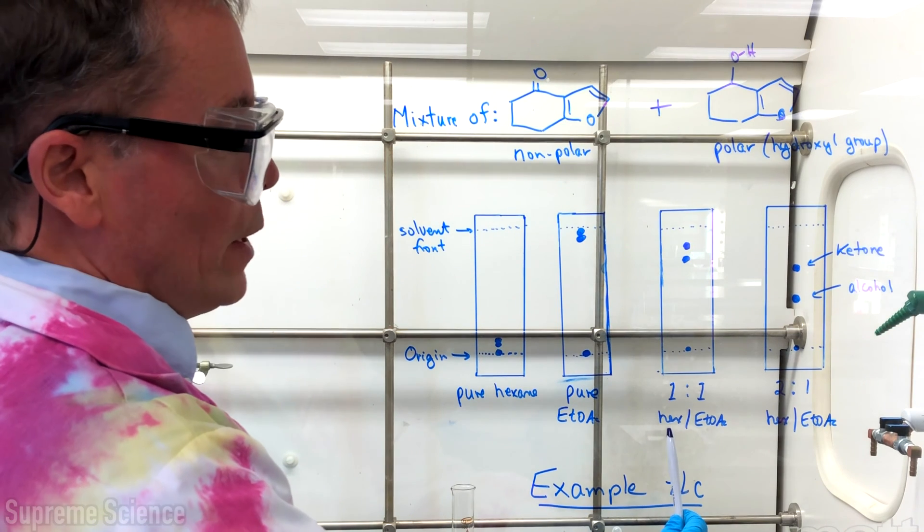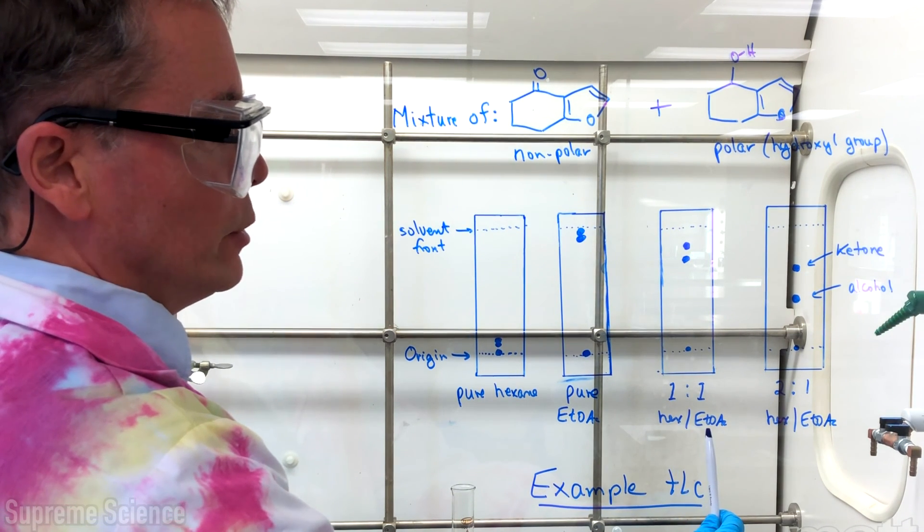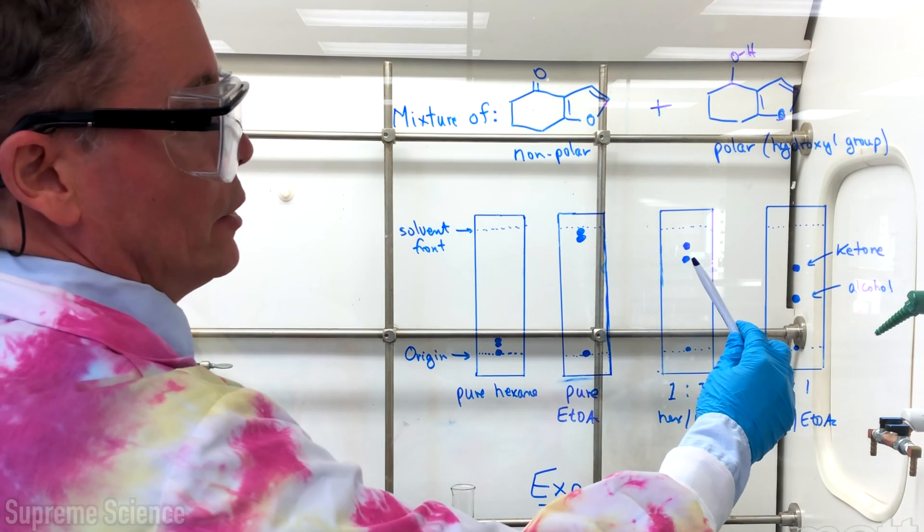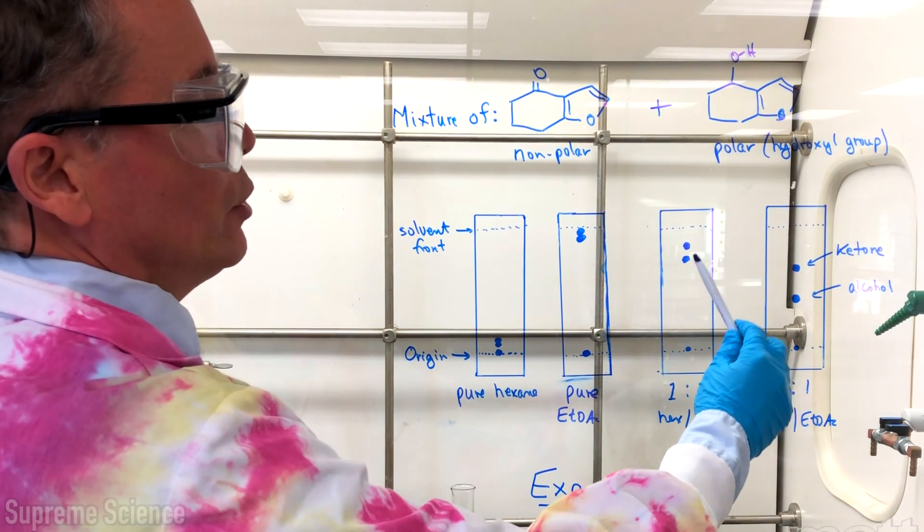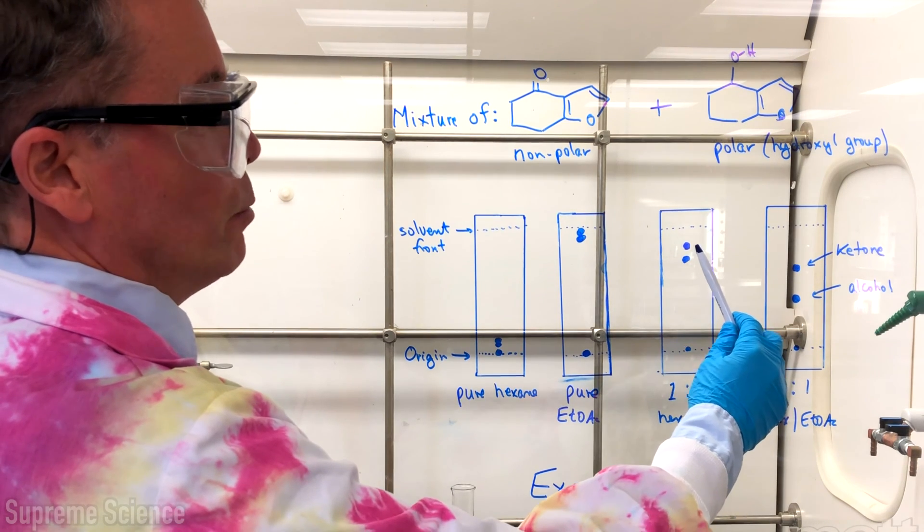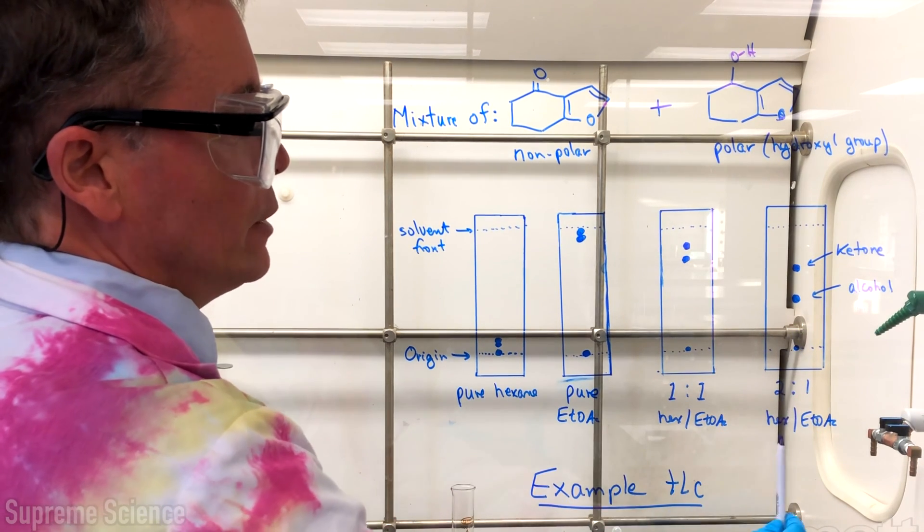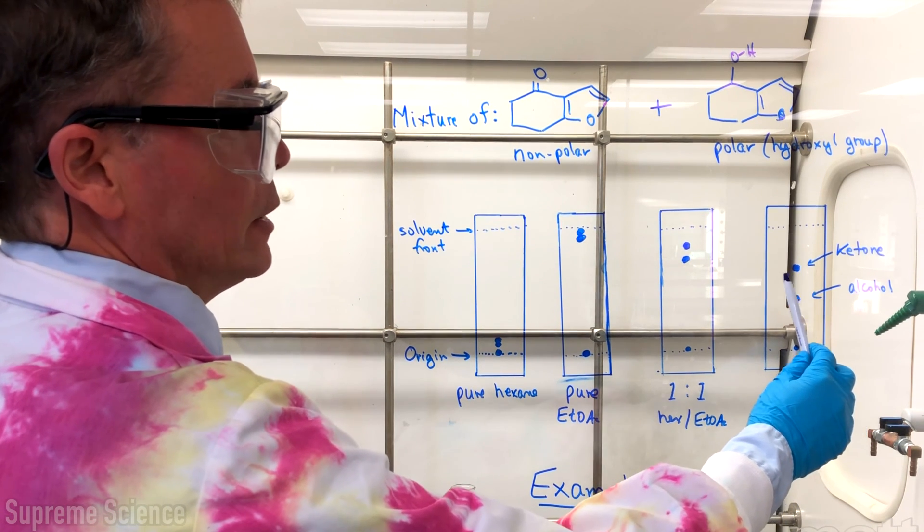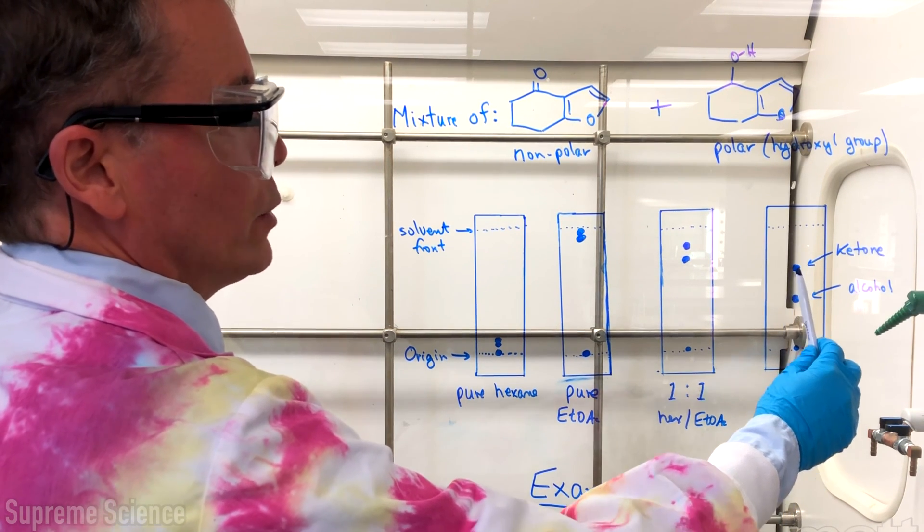So we try one-to-one mixture of hexane and ethyl acetate in our TLC chamber and this puts our spots, they're separating but they're a little bit too far up so we want to bring these spots down. We add a little bit more hexane so in two to one hexane ethyl acetate the spots are a little further down the plate and well separated.